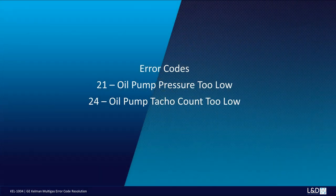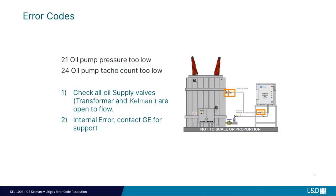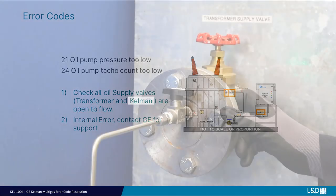Error code 21: Oil pump pressure too low, or error code 24: Oil pump taco count too low. Check all transformer and Kelman oil supply valves are fully open to flow.